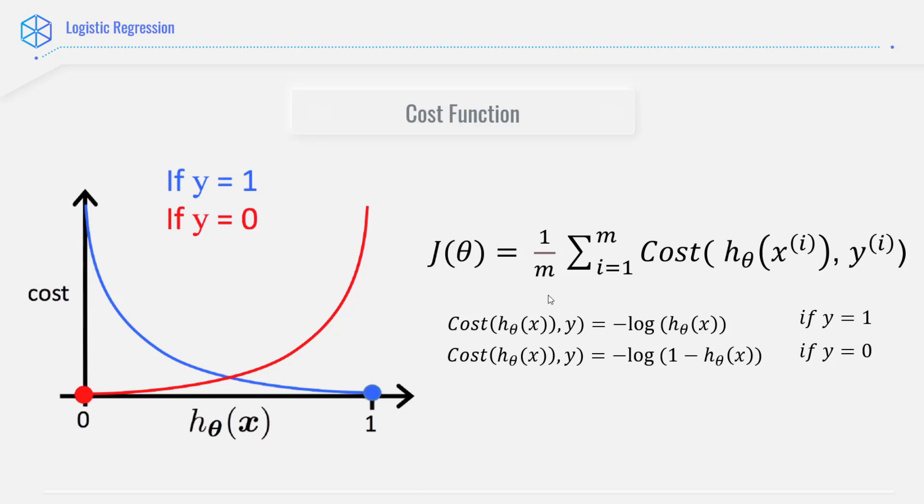Cross entropy loss can be divided into two separate functions based on for the class y equals 1 and for the class y equals 0.